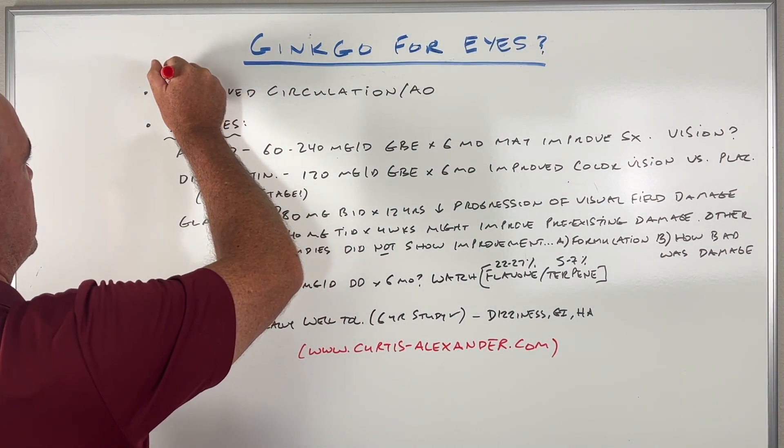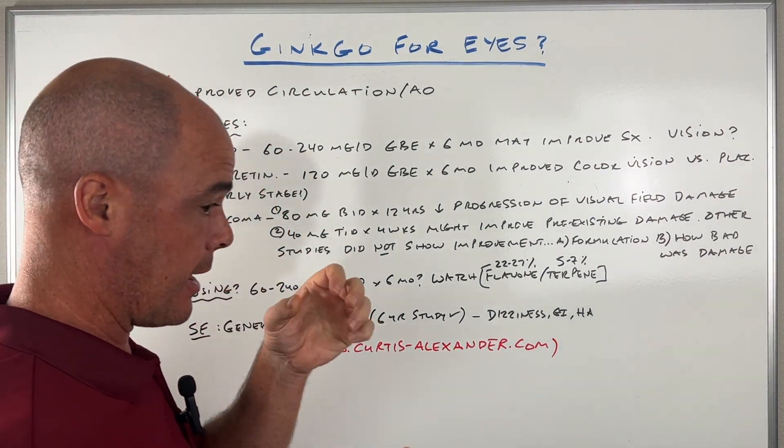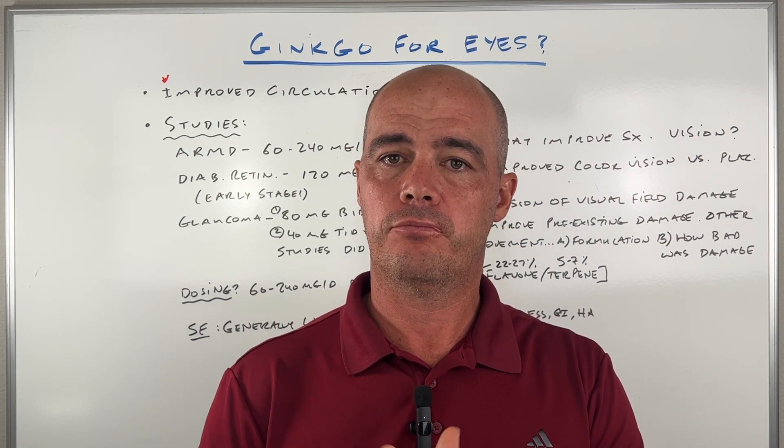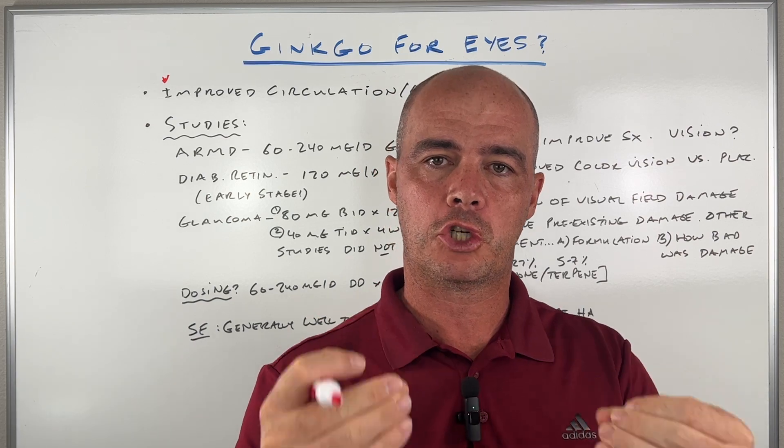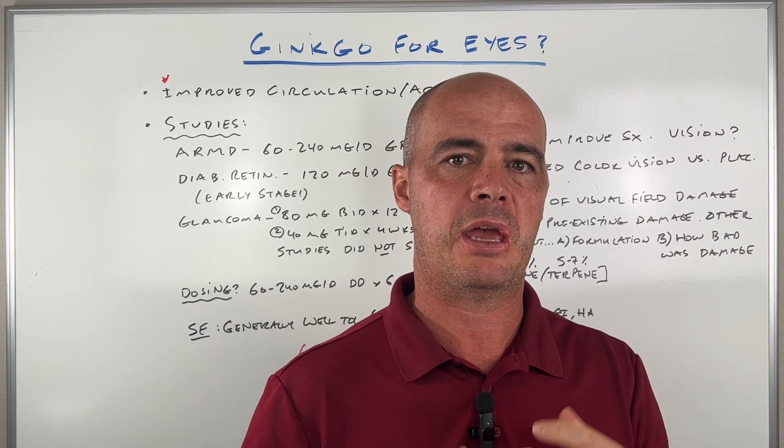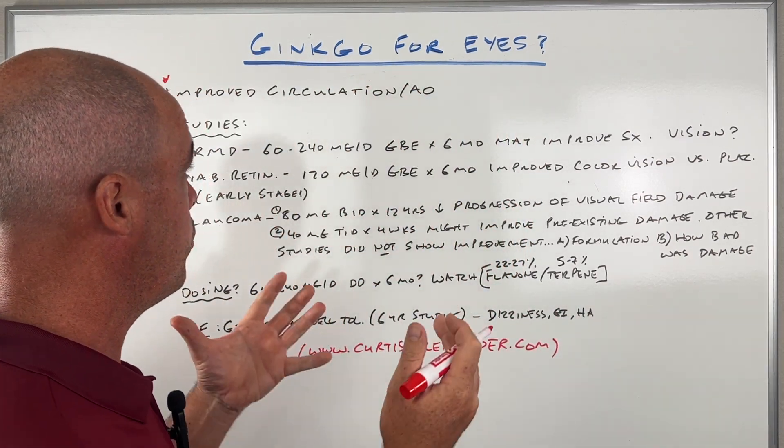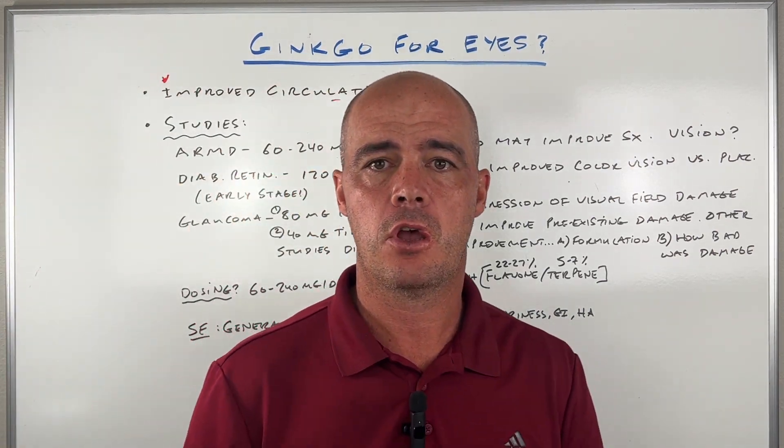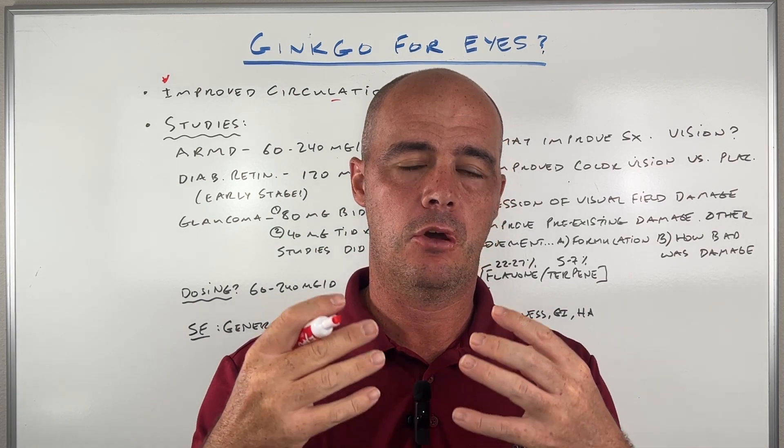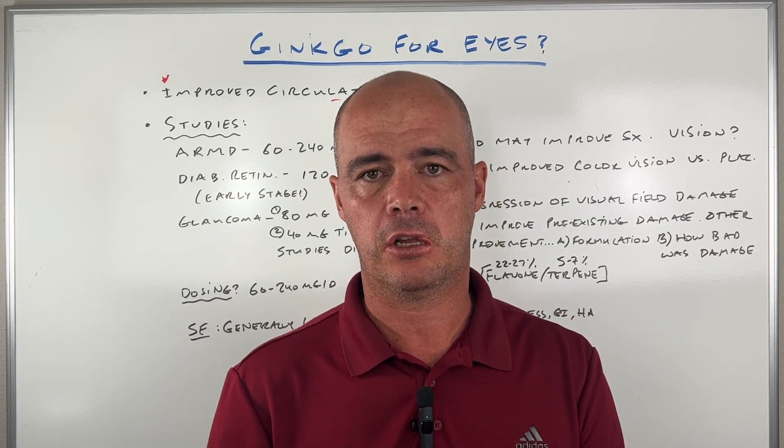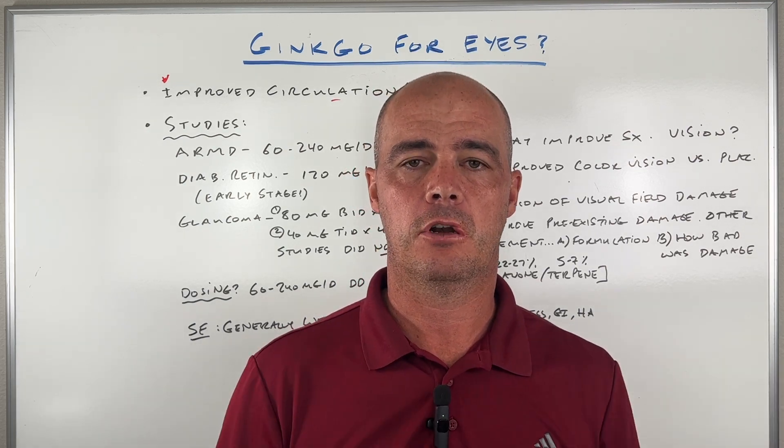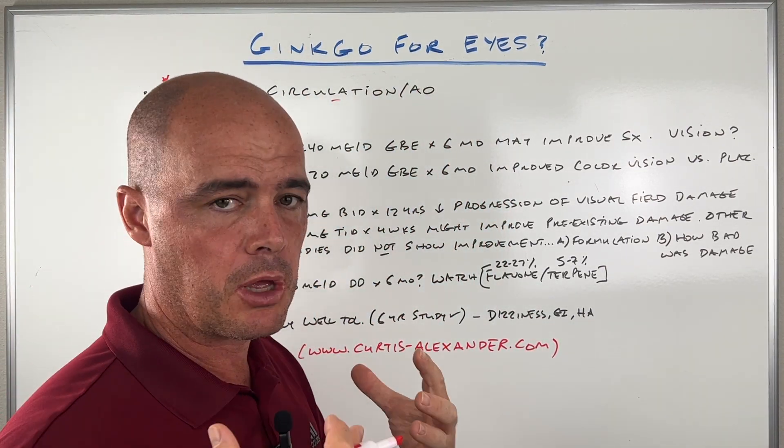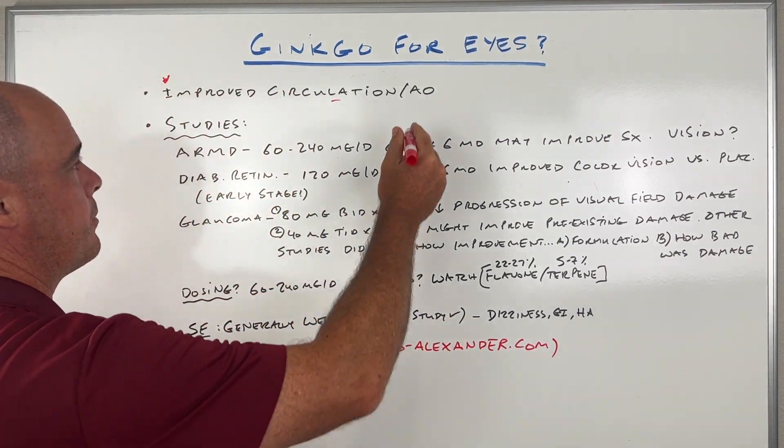So when we're talking about ginkgo, one of the things that we need to discuss is what in the world is it actually doing in your body? The short answer is we don't know for sure, but we do see some potential benefits when it comes to your eyesight. We believe that ginkgo is going to help with circulation. We've seen effects on the platelets and decreasing clotting. We've seen some cardiovascular and heart effects, and so it makes sense that that increased blood flow could help with any sort of vision or eye problems.